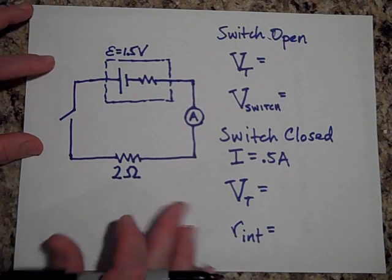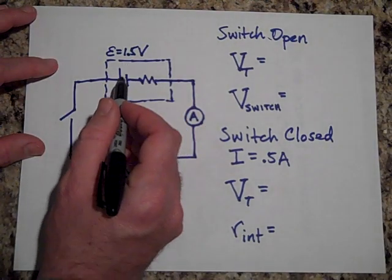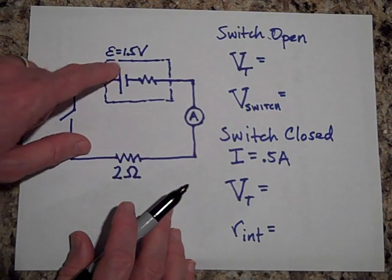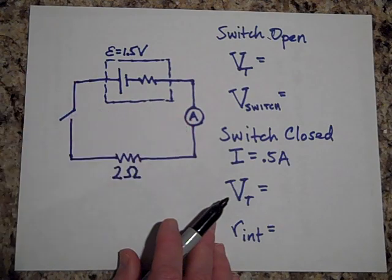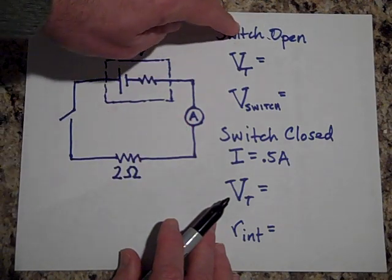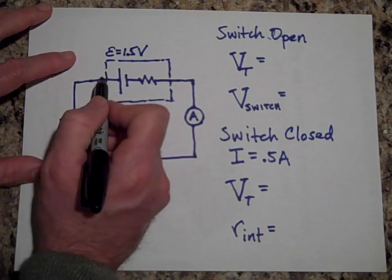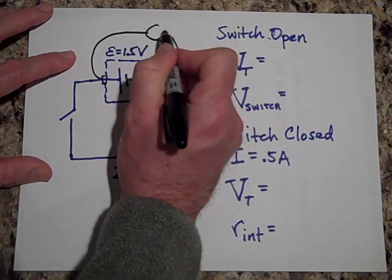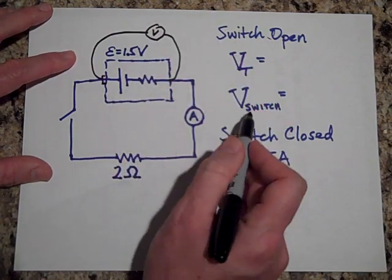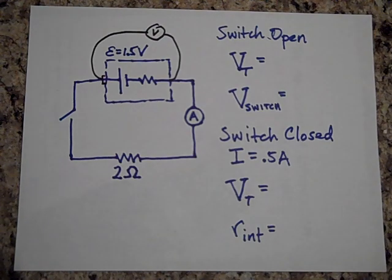Moving along, we have a battery with some internal resistance, an EMF of 1.5 volts, a 2-ohm resistor, and the switch is open. There's an ammeter in the circuit. When the switch is open, what will be the terminal voltage? If I put a voltmeter at the terminals of the battery, what is it going to read, and what will be the voltage across the switch?